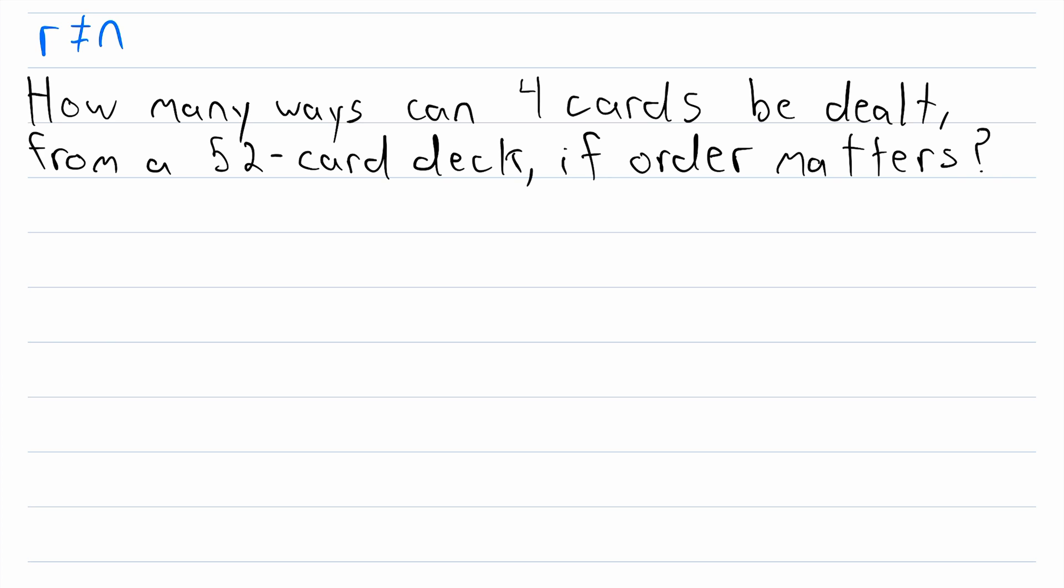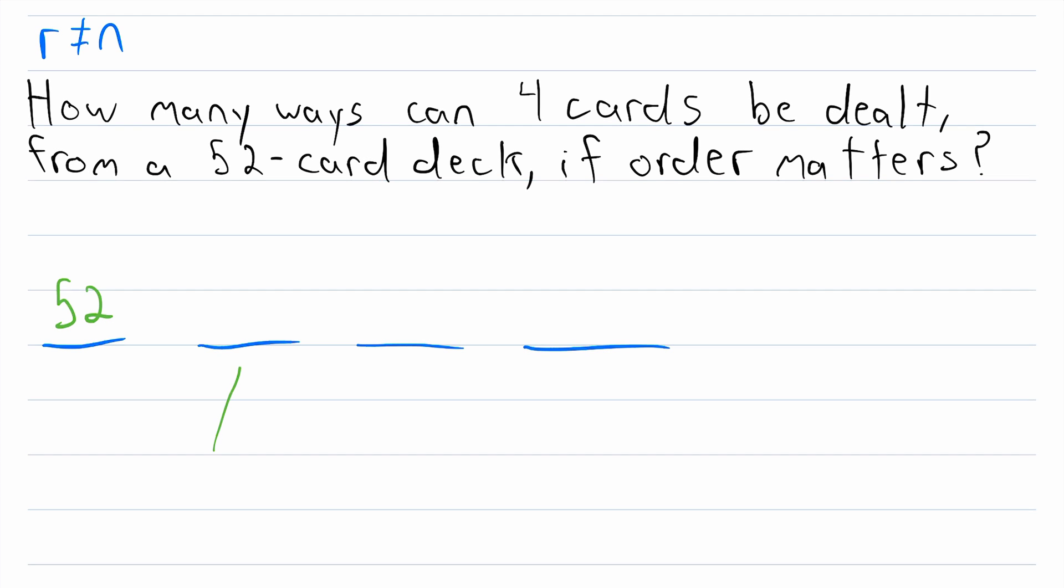Four cards are being dealt from a deck of 52. Some card's going to be first, some card's going to be second, some card's going to be third, and some card's going to be fourth. How many options are there for the first card? Well, every card in the deck could go in the first spot, so there are 52 options. And then what about for the second spot? Well, some card's already gone first, so there are only 51 cards that could go second. Then there are 50 cards that could go third, and 49 cards that could go fourth. And of course, these are all getting multiplied.